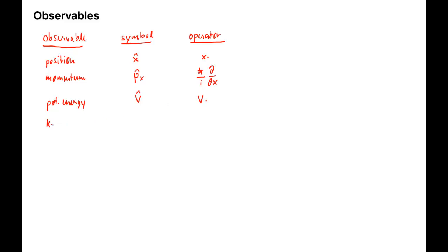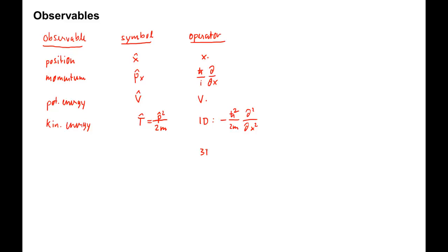The kinetic energy is represented by T hat. It's equal to the momentum operator squared over 2m. For one dimension, this is equal to minus h-bar squared over 2m times d squared over dx squared. In three dimensions, it's a little more complicated.